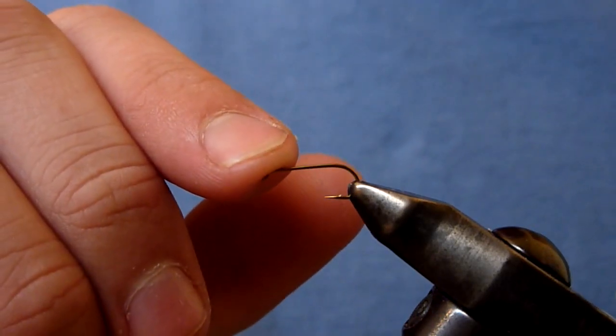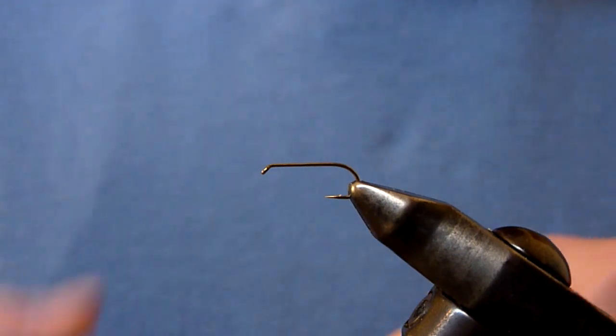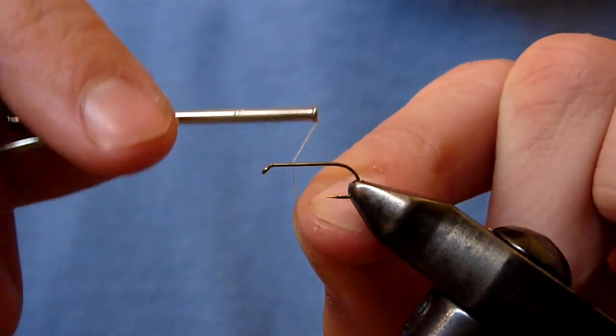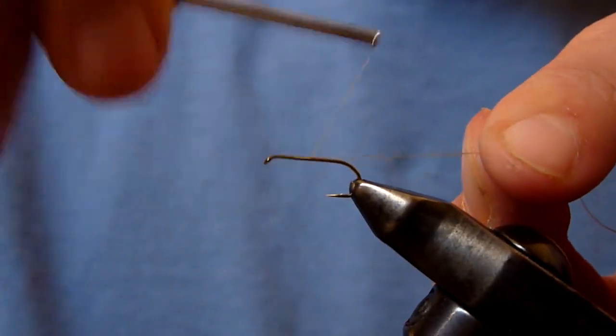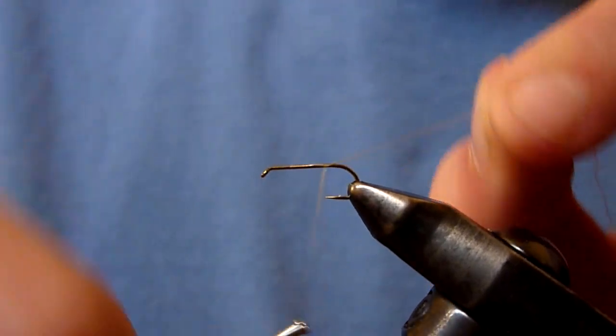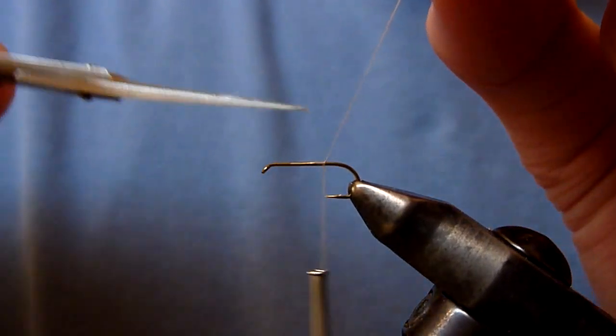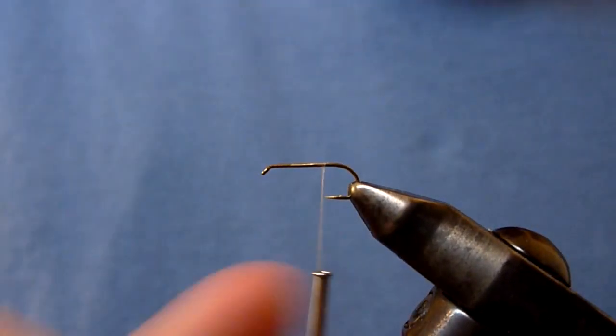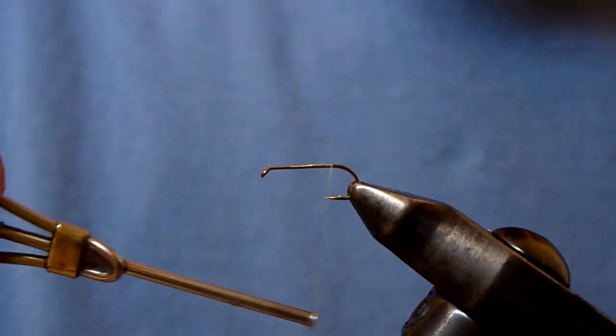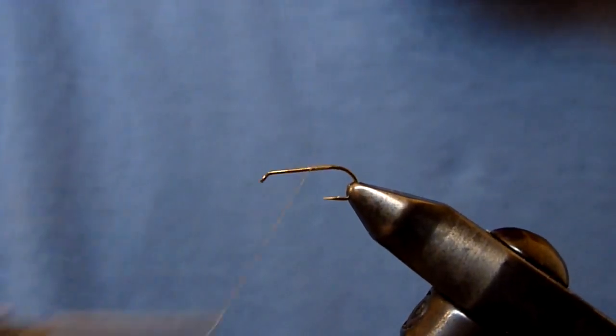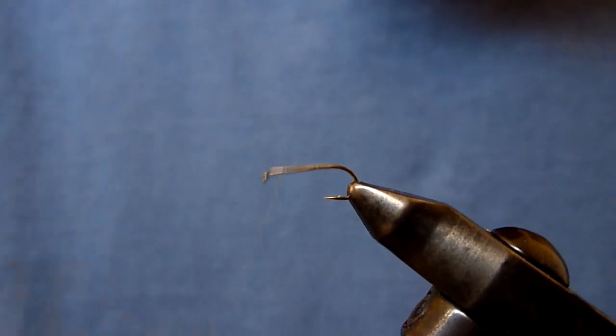I'm going to start off with a TMC100 dry fly hook in size 14, and some UTC70 denier thread in tan. Lay down a nice little thread base, clip the tag in, work it back in line with the bar and bring it forward to just behind the hook eye.